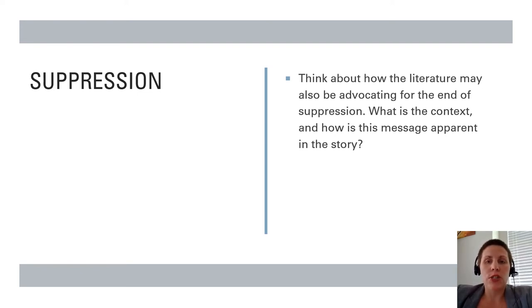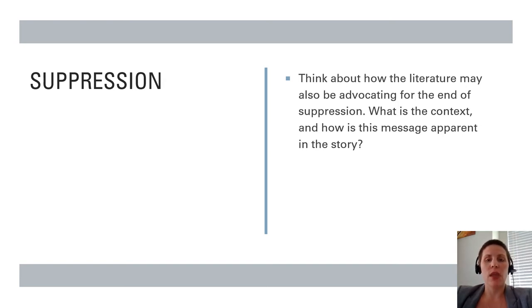Many postcolonial scholars are interested in how the suppression of native traditions and beliefs leads to a kind of erasure of native peoples. Is this aspect of suppression visible in the literature? This is also connected to the way suppression enables colonization to continue. An analysis of this theme involves looking deeply at the connections to make broader conclusions about suppression and colonization, and thinking about how the literature may also be advocating for the end of suppression.